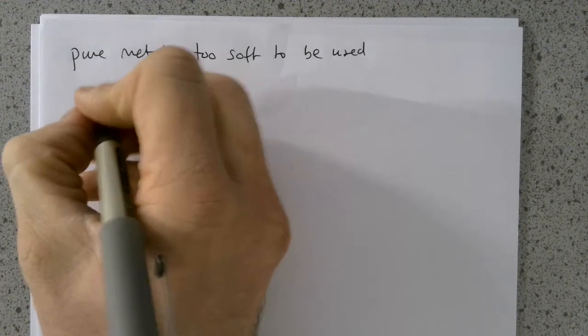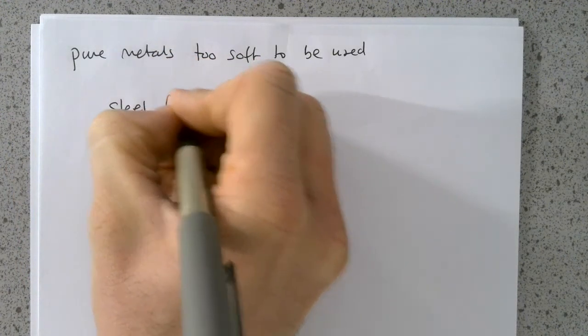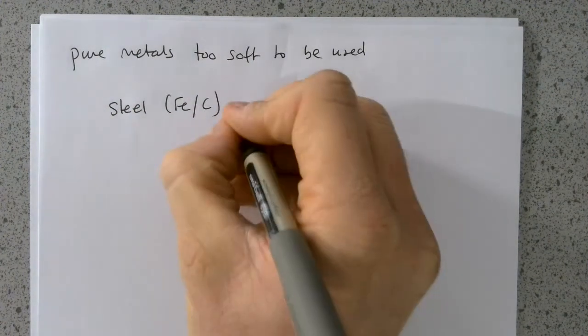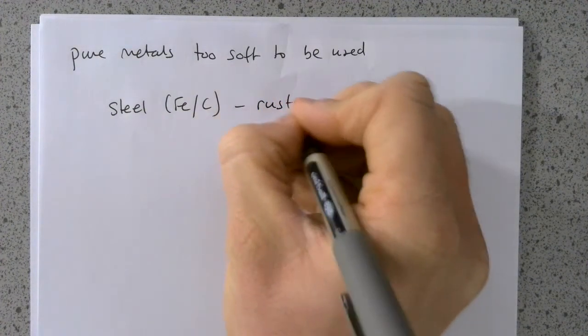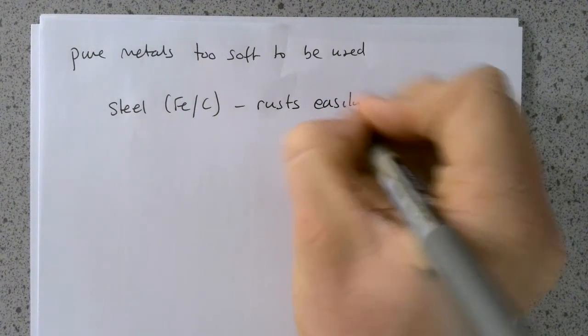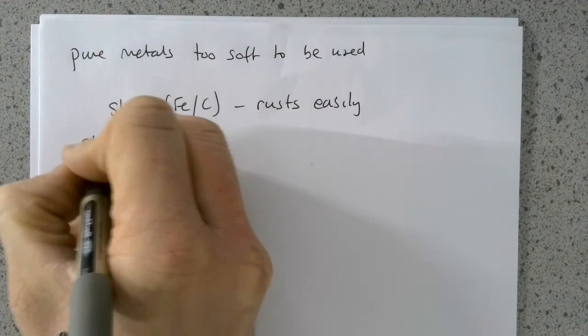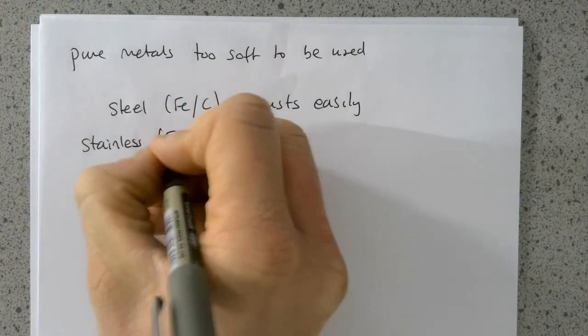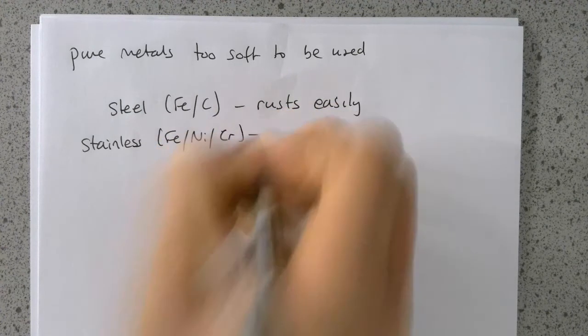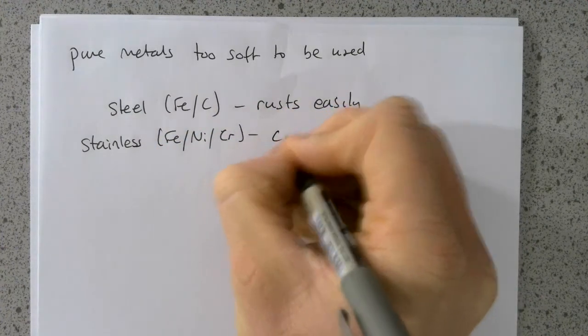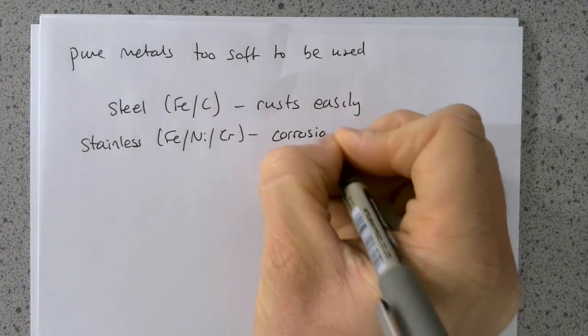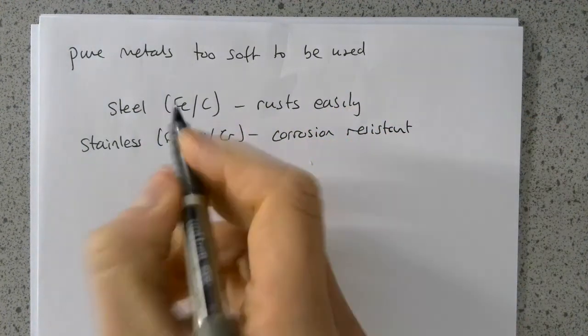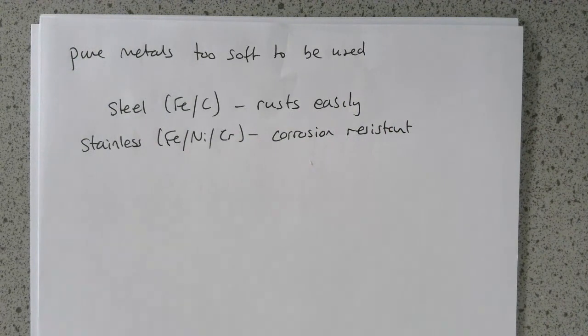We saw, for example, earlier, steel is an example of an alloy of iron with a small amount of carbon that rusts easily. If we have stainless steel, which we use for things like cutlery, which has got iron, nickel and chromium in it, then this is corrosion resistant. Because we've changed the structure of the alloy, we've changed its properties.